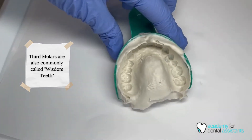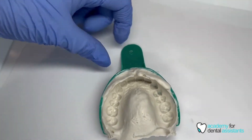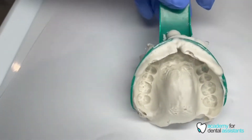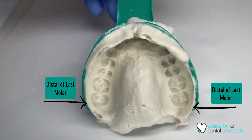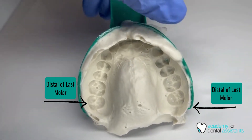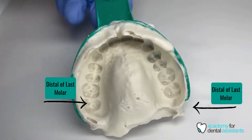It's really important that you do get the distal of that very back molar in there. As you can see, I do have the distal on both the upper right as well as the upper left quadrant.